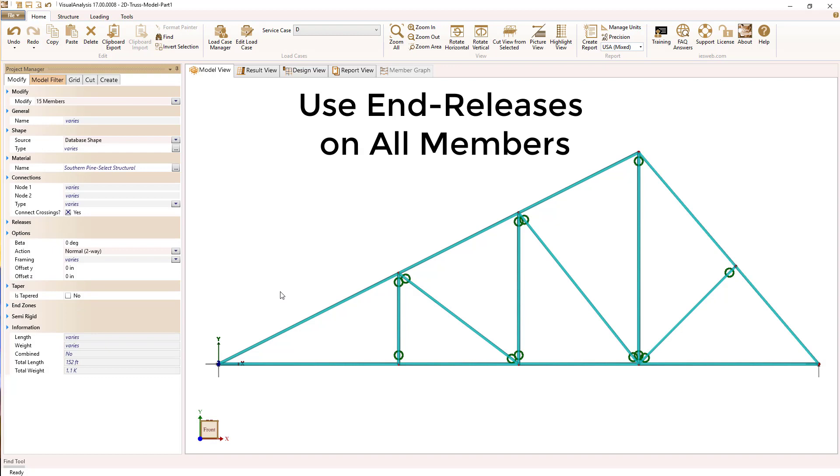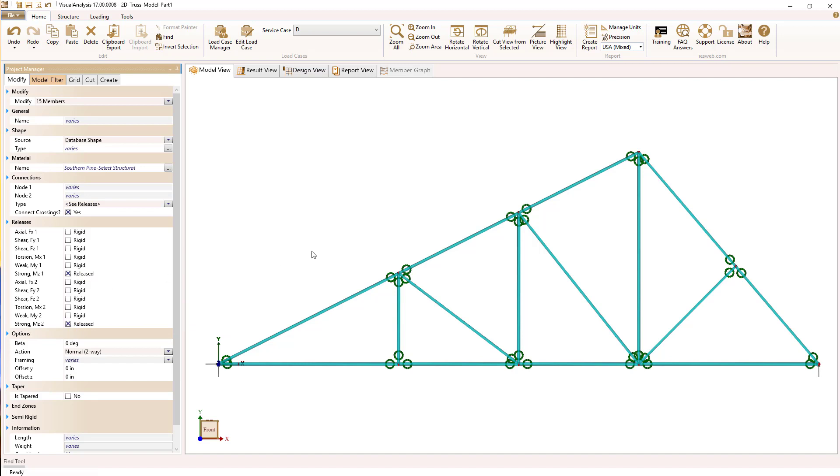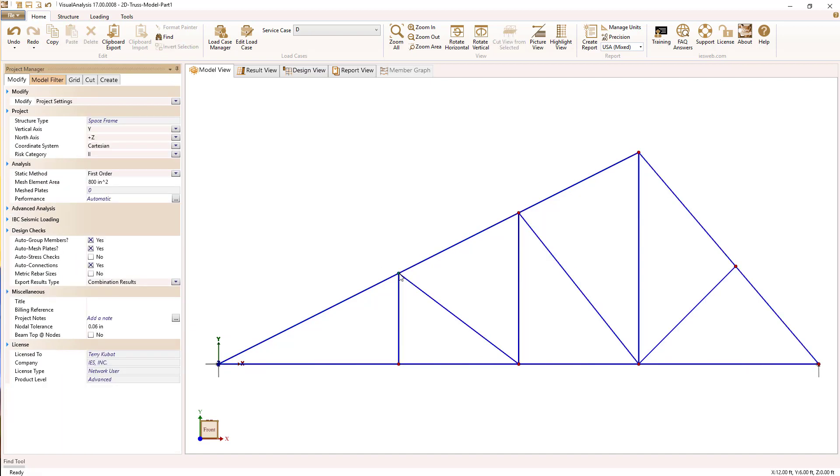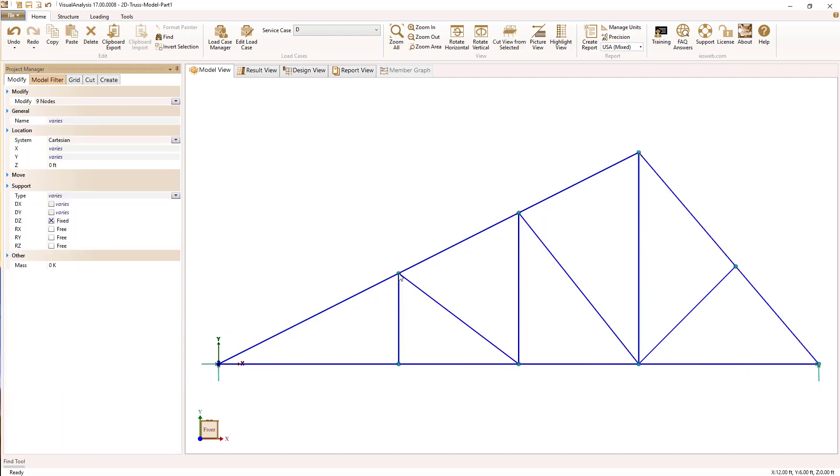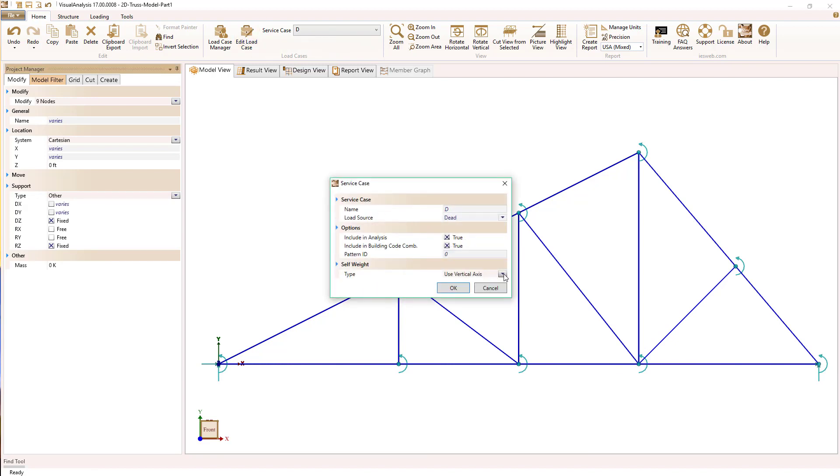We do this by selecting all the members and manually applying the moment releases. What we end up with is something that's a little bit unstable mathematically, and the easiest way to fix it is to just prevent these nodes from spinning by setting a support on their rotation in the plane.